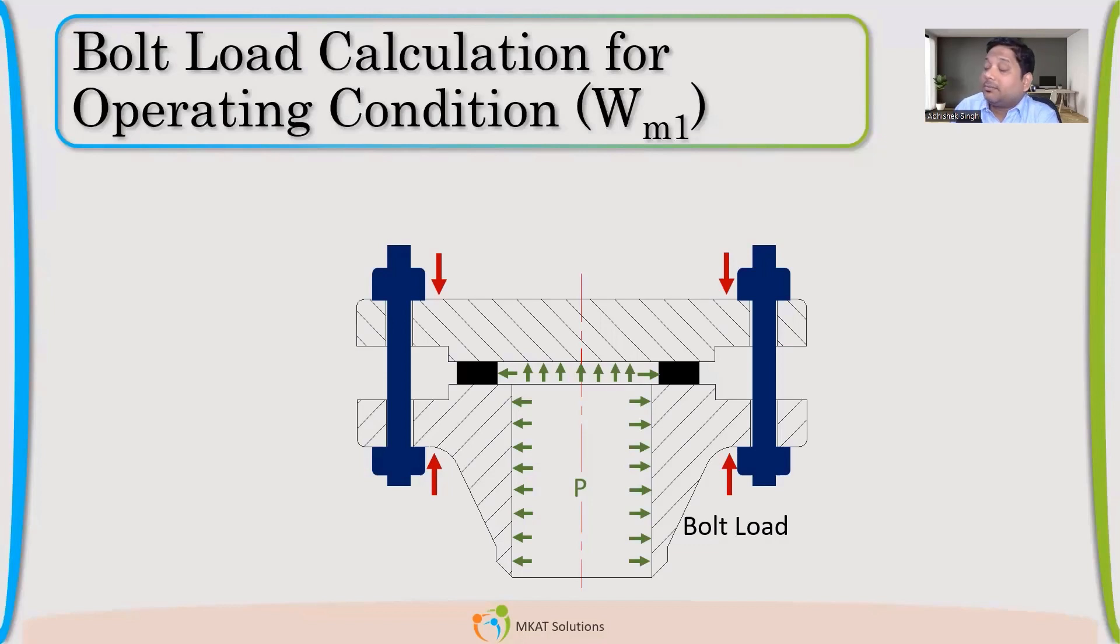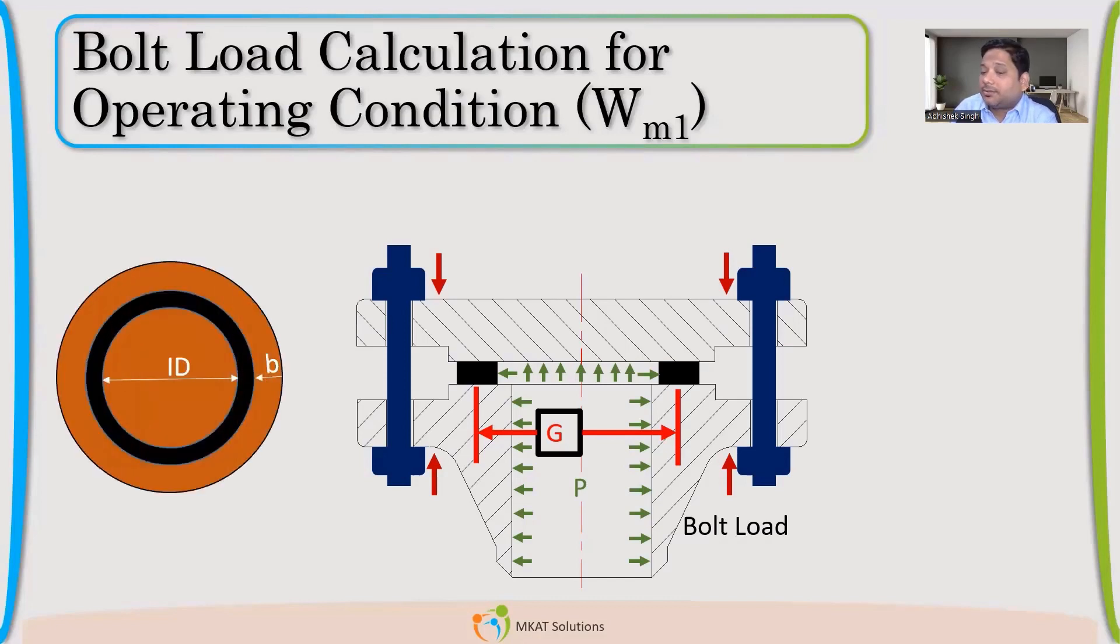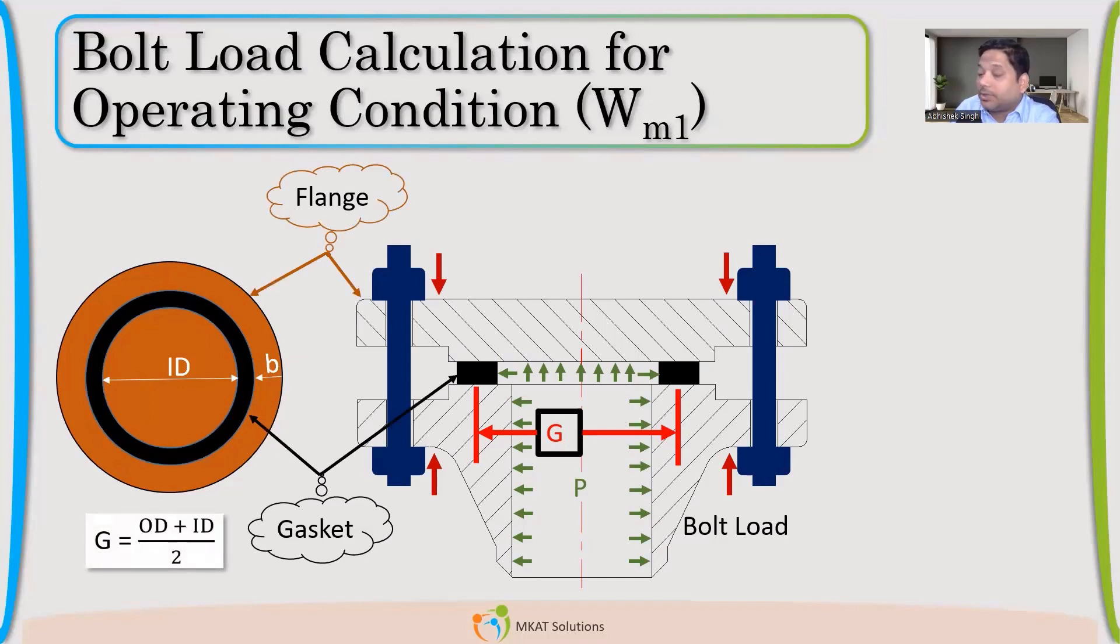If you understand the M and Y value, you should be able to calculate what we are going to calculate. So we will try to derive the WM1 value. Now the simple calculation: there is pressure applied inside. What load, that is the WM1 value, I need to have to keep this intact? Now I will define that gasket mean diameter G. G is nothing but the average of ID and OD. So if I have a gasket width B, you can easily calculate the mean diameter of the gasket. Now, anyone would like to tell me what will be the equation for WM1, the bolt load?